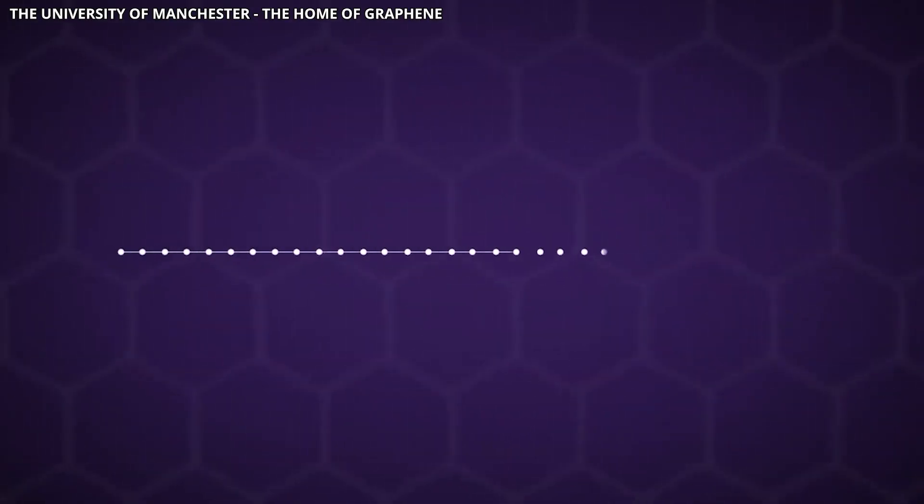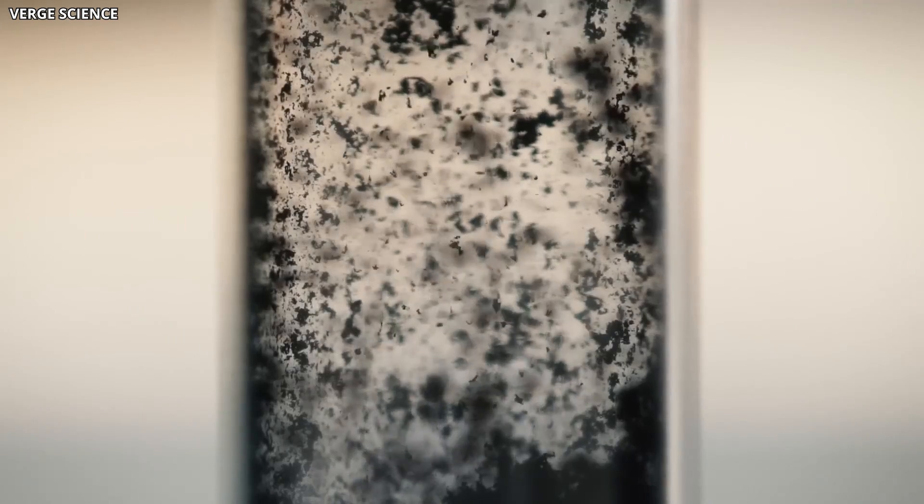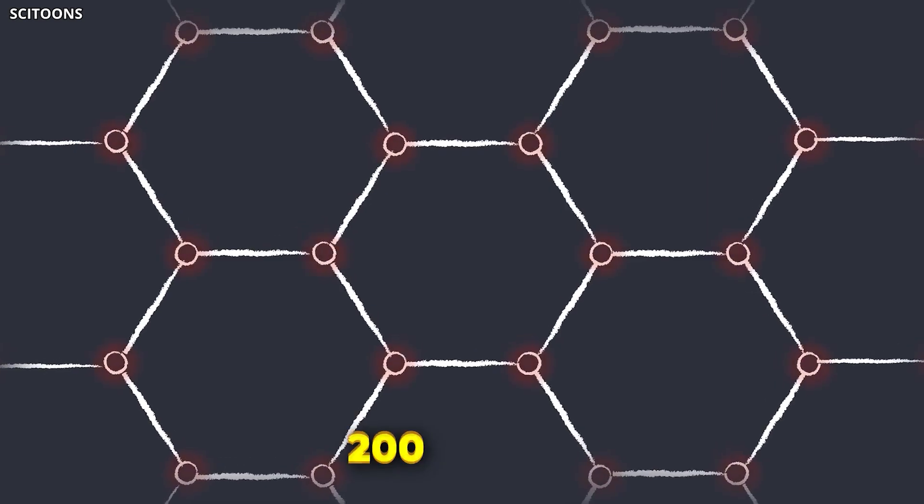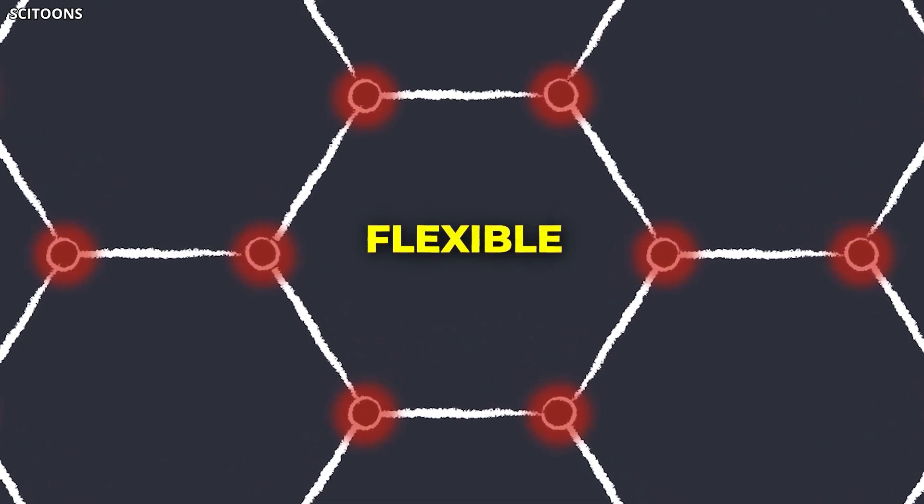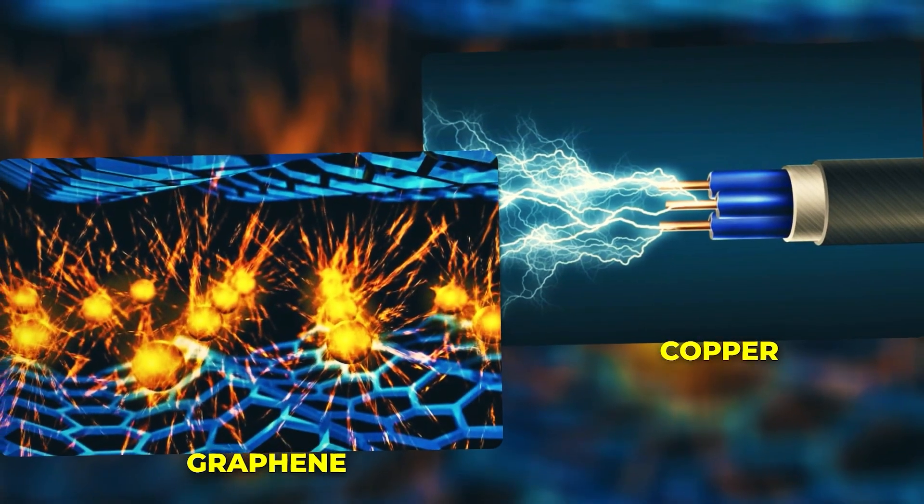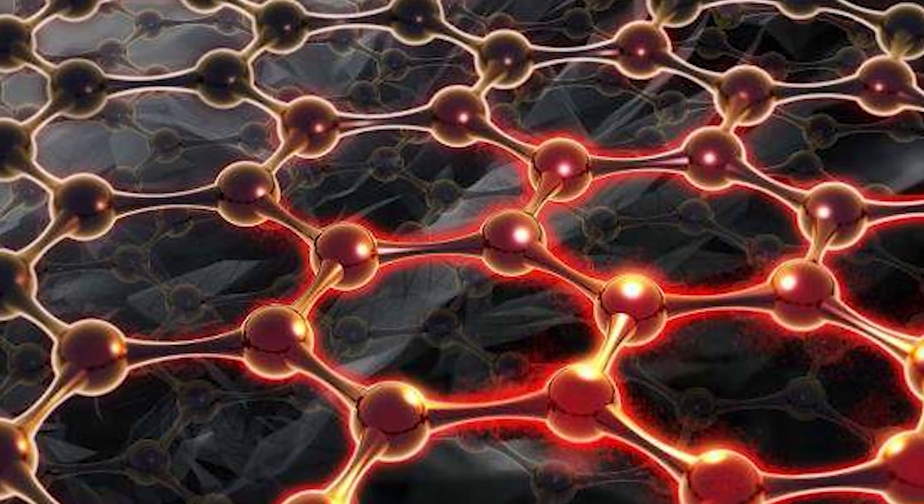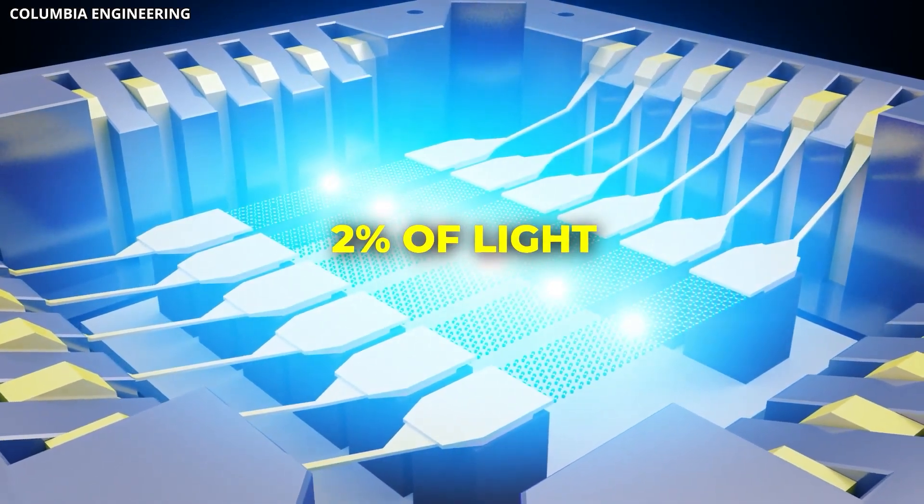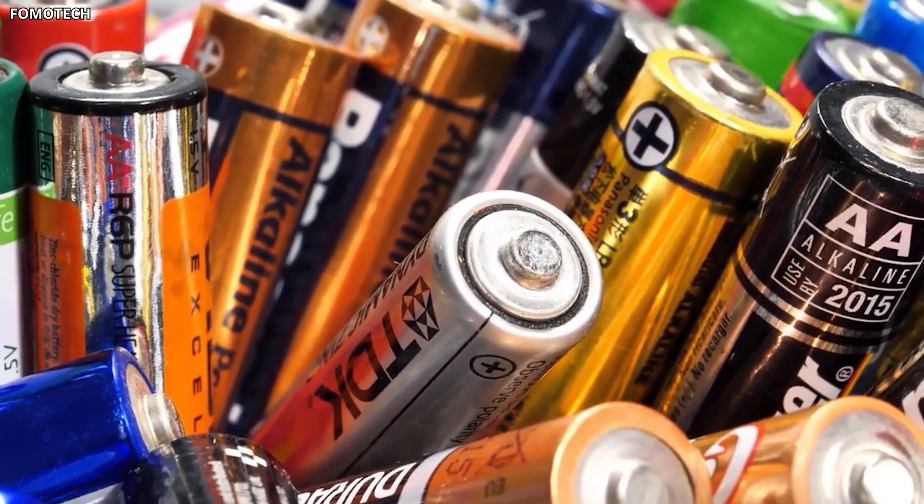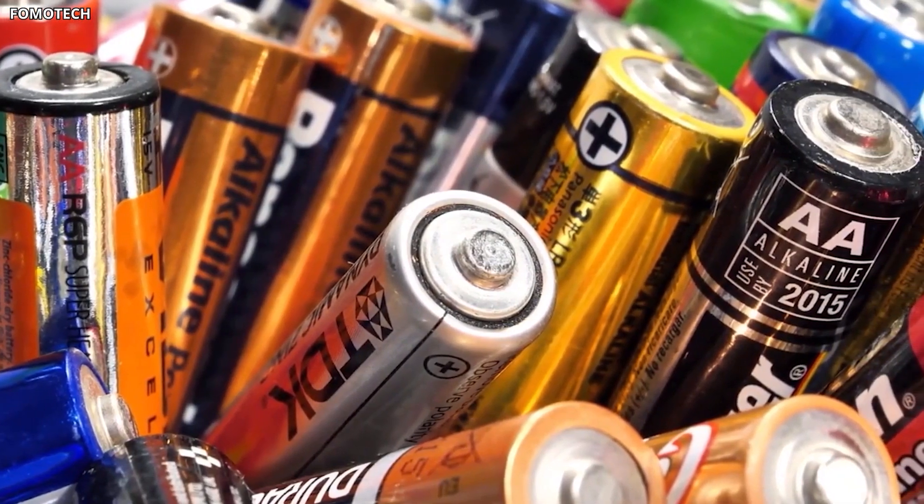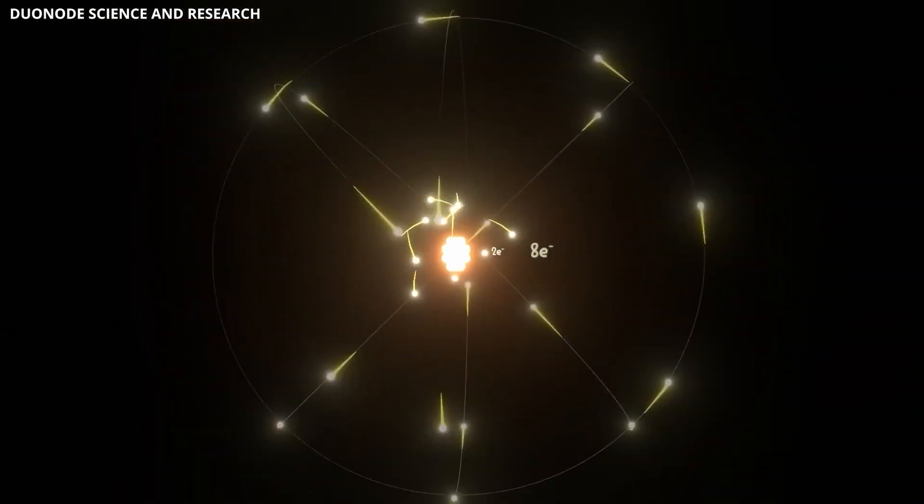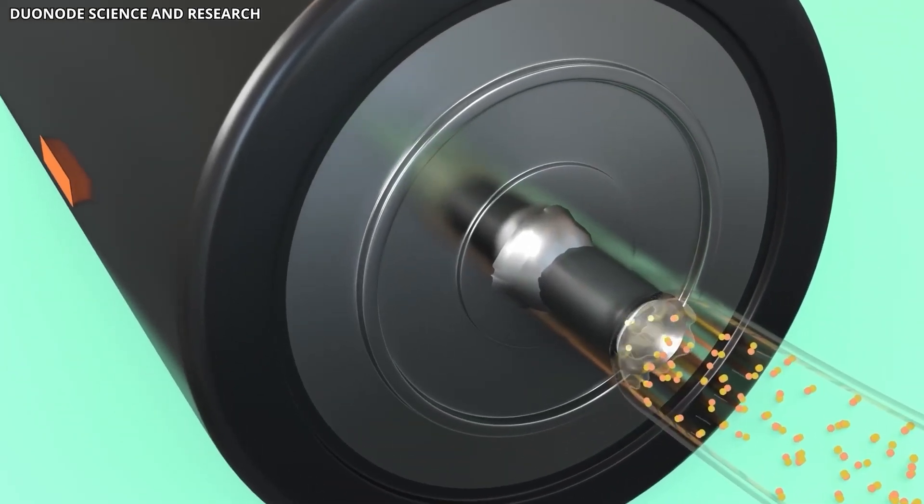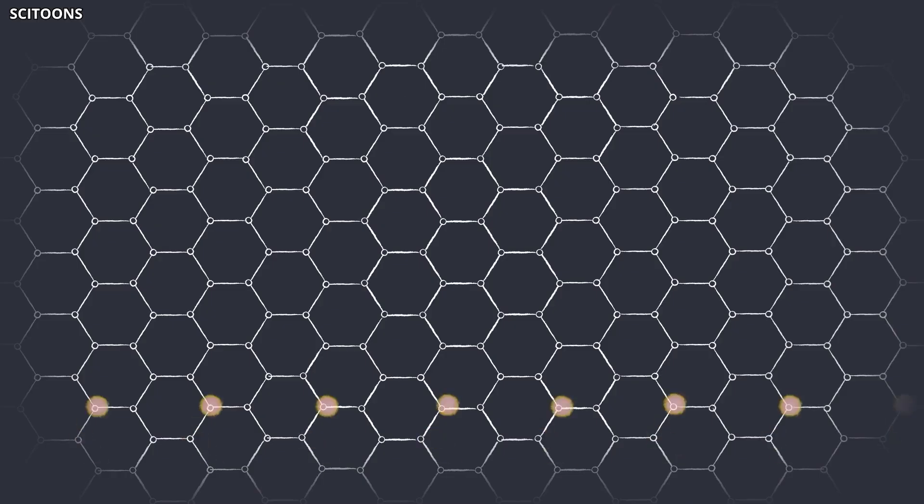What makes graphene special isn't just that it's thin, it's that it combines properties that shouldn't coexist. It's stronger than steel by a huge margin, about 200 times stronger, yet it's flexible. It conducts electricity better than copper. It conducts heat better than almost any material known. And it's nearly transparent, absorbing only about 2% of light despite being a solid sheet of atoms. For battery researchers, this combination is almost perfect.